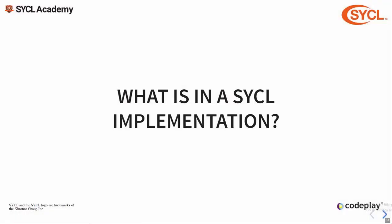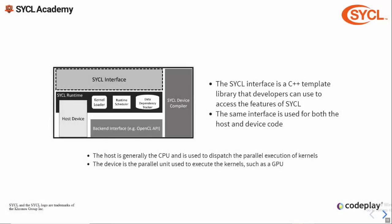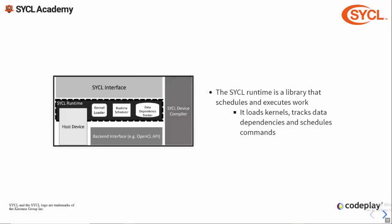Next we're going to look at what is in a SYCL implementation. First, every SYCL implementation must provide the standard SYCL API — a standard C++ template library that provides the features developers need to write SYCL applications. This same API is used for both host application code and device code. Next up is the SYCL runtime, which sits below the SYCL API and performs a number of functions: it loads and compiles kernels, performs data dependency analysis, and schedules all operations required to manage data and enqueue kernels to the backend.